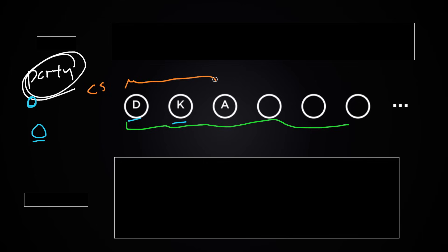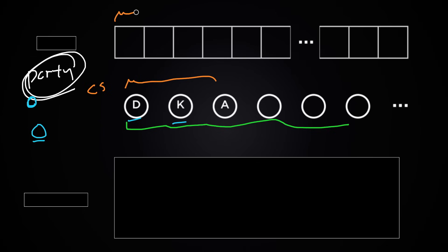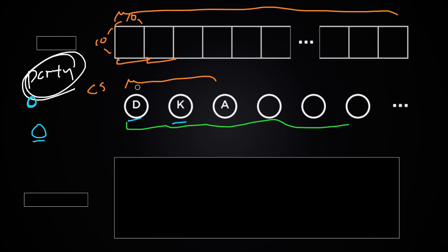One idea: get a very long box with 100 partitions, each with exactly the same shape — say, 10 centimeters by 10 centimeters. Every time someone comes to the party, put their ball in the order they arrived. David's ball comes here, Kevin's here, and so on. This actually corresponds to the data structure called an array in computer science.